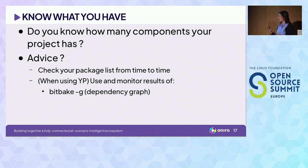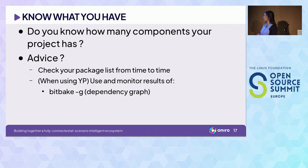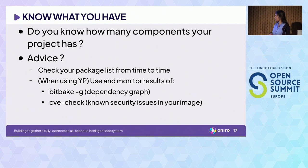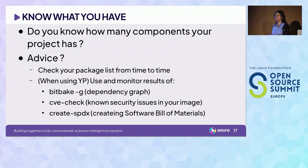If you are using the Yocto project, there are a few useful tools, especially if you are monitoring from CI run to CI run. Bitbake -g with the dependency graph — security people love looking at dependency graphs and getting headaches after analyzing what they see. Then the CVE check, giving you the known security issues in your image. Also diffing when possible, and creating an S-BOM. Three useful tools when looking at what you actually have in your project.